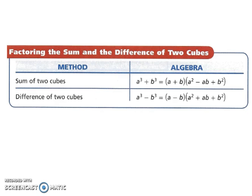Now let's look at factoring the sum and difference of two cubes. So the sum of two cubes: a cubed plus b cubed equals a plus b times the quantity a squared minus ab plus b squared. If you had a difference of two cubes, a cubed minus b cubed, your first one is going to be a minus b. And then your second quantity is going to be a squared plus ab plus b squared.